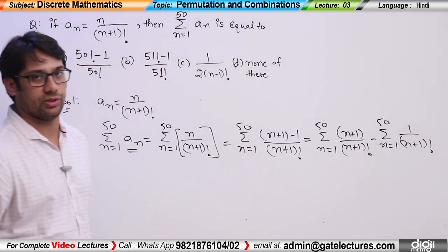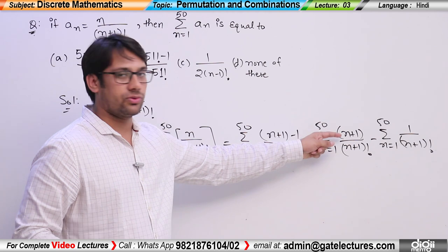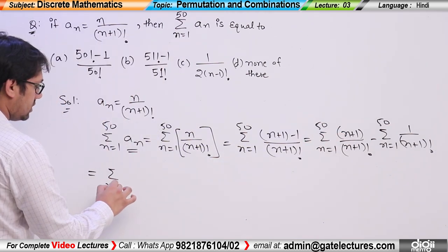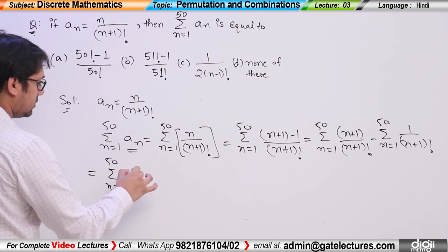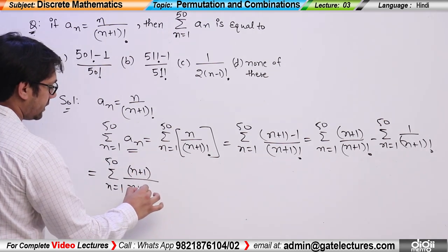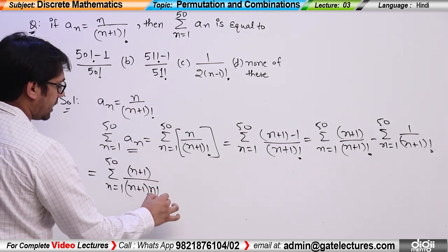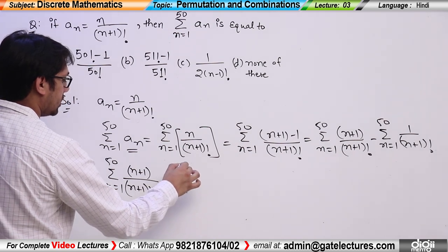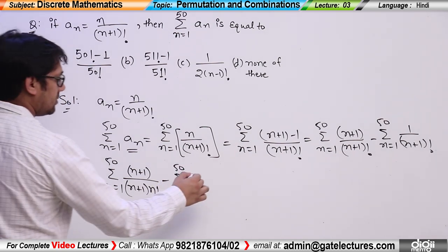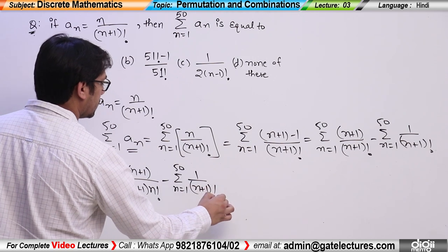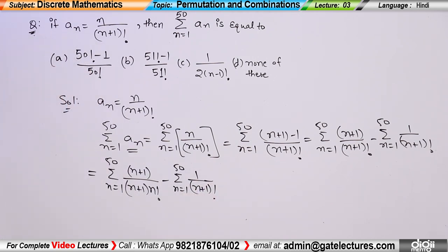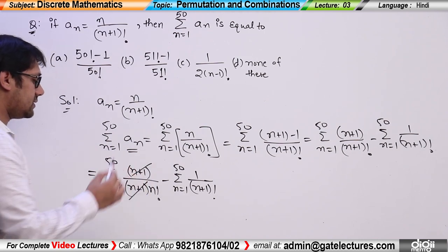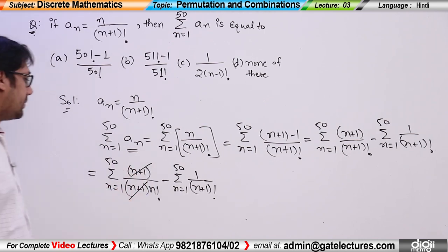From the first term, we can eliminate (n+1). So this becomes summation from n=1 to 50 of (n+1) / [(n+1) × n!], minus summation from n=1 to 50 of 1/(n+1)!. The (n+1) and (n+1) cancel each other.